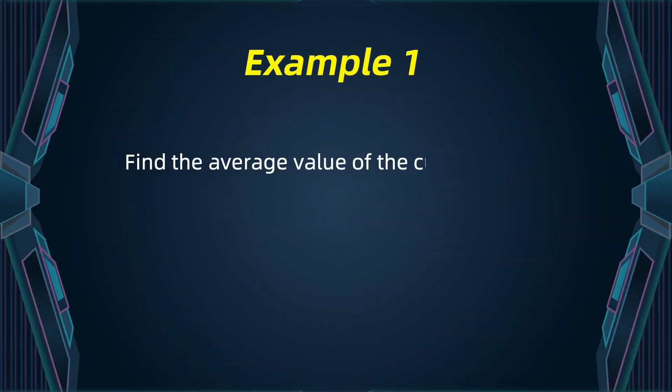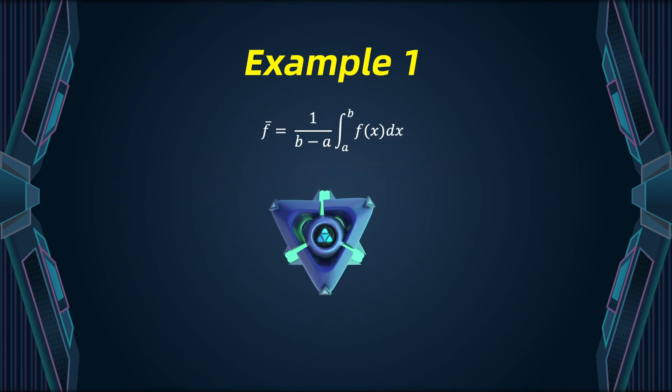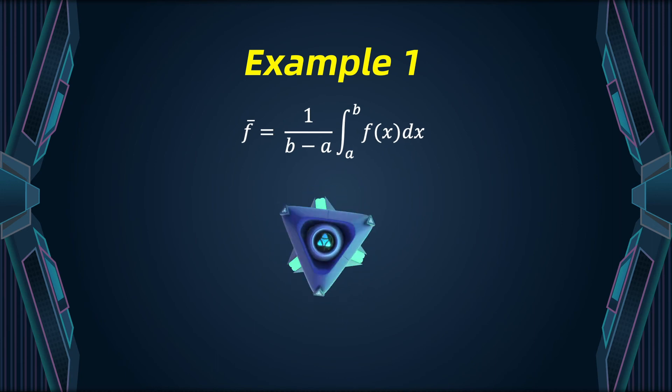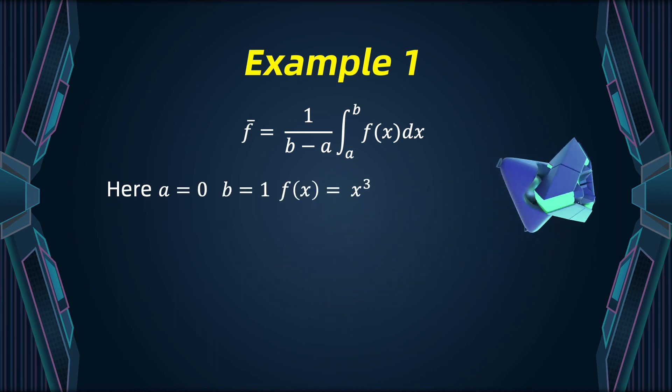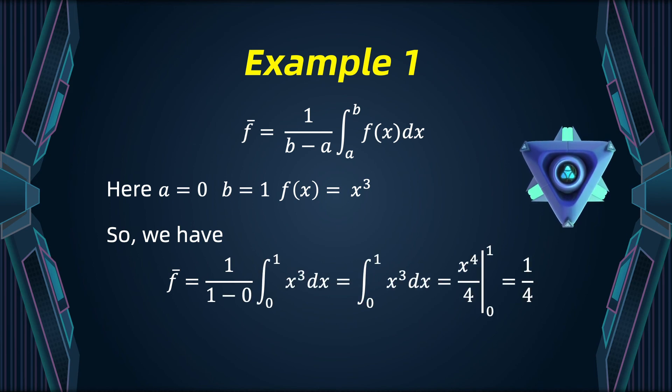Let's compute the average of the cubic function on the closed interval 0 to 1. We can also denote the average of a function by the symbol f with a bar on top of it. This is the formula. In our case, a is going to be 0, b is going to be 1, and f of x is x cubed. When we plug this into our formula, we obtain the following integral: 1 divided by 1 minus 0 times the integral from 0 to 1 of x cubed. This is a quite simple integral. The value is 1 over 4. This is the average value of the function.